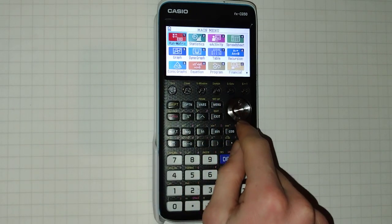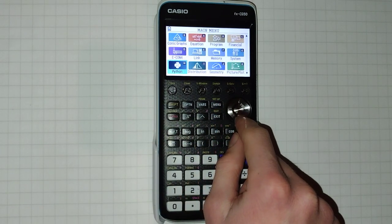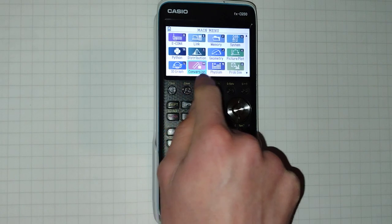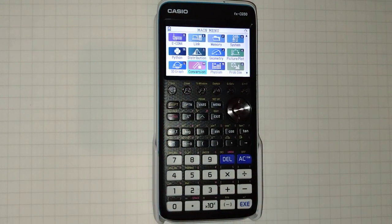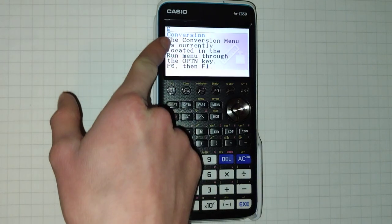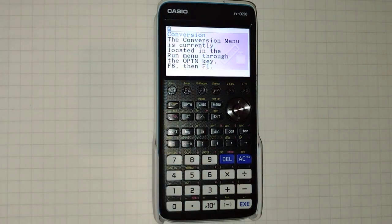One final note is that there is a conversion icon on your home screen and this is technically an add-on so if you don't have it you may need to go to the Casio website and install it but it is a default add-on that should come with your calculator. It does nothing you can ignore it it is just telling you that the conversion menu is currently located in the run matrix menu just as I've shown you.